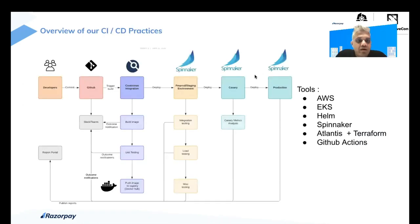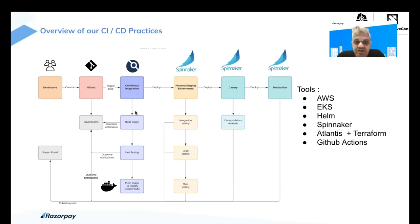A quick look at what our CI/CD practice looks like — not very different from the way many companies operate, but just to build up the motivation for the kind of problems we're dealing with. At a very high level, developers commit code into GitHub. We heavily use GitHub Actions for CI integration. GitHub Actions basically builds Docker images, runs a variety of unit tests, and pushes them into our private Docker registry. As soon as these images are available, developers typically start deploying that code with Spinnaker, an open-source CD platform created by Netflix.